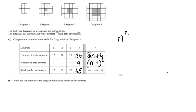I believe for another two points they ask question b: Work out the number of the diagram which has a total of 480 squares. So then the total number of squares is 480. So is that diagram 5, 6, 7, 8? That is the question.